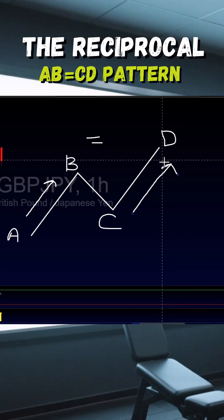For a reciprocal one, instead of looking at the extensions, you're looking at the pullbacks.